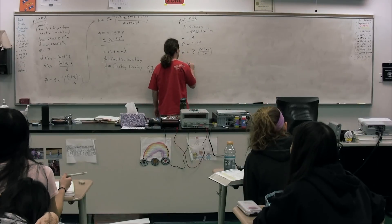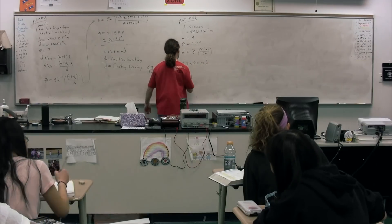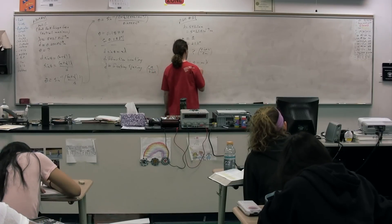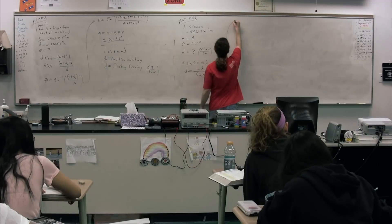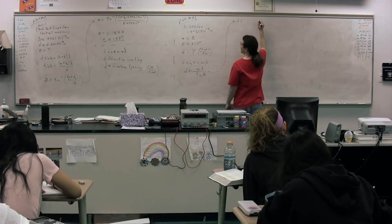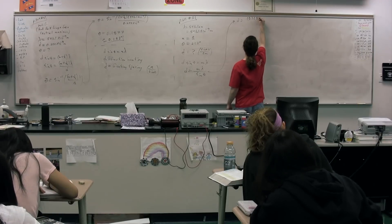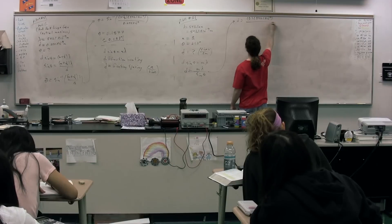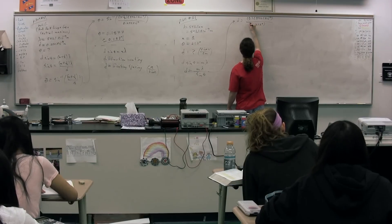So D sine theta equals M times lambda. Our goal is to solve for D, the grating spacing. So M lambda over sine theta. We have D equals one times lambda 546.1 times 10 to the negative 9 over the sine of 21.2 degrees.